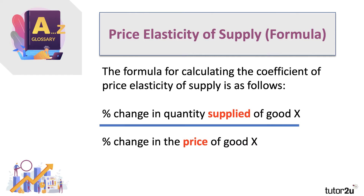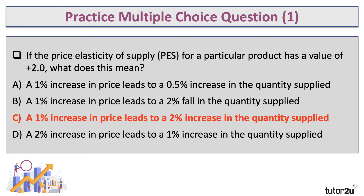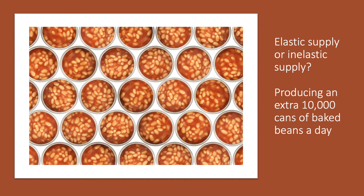In this video, I'm going to pose four multiple choice questions — let's see if you can get all four right. Just press the pause button when you want to have a go. If the PES for a particular product has a value of plus 2.0, what does this mean? The answer is C: a 1% increase in price leads to a 2% increase in the quantity supplied — supply is responsive to price.